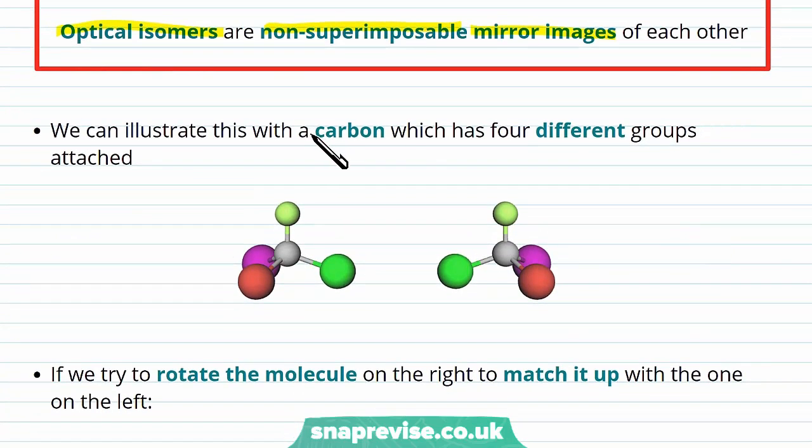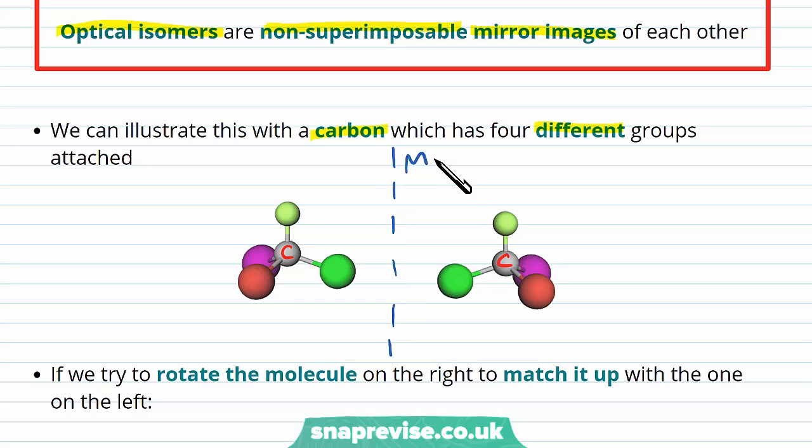We'll illustrate the point with this carbon, which is the central grey atom shown here, and it has four different groups attached shown by these balls of different colors and sizes. What we've done with the molecule on the left to create the molecule on the right is reflect it through a mirror plane between the two objects.